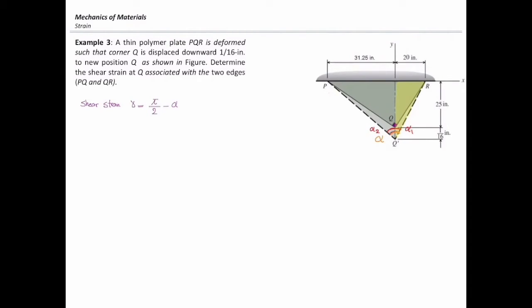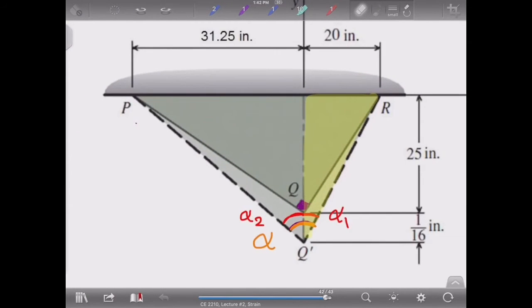To determine alpha, I will split that deformed element into two parts. First, I will consider this part, so I will consider the right triangle.